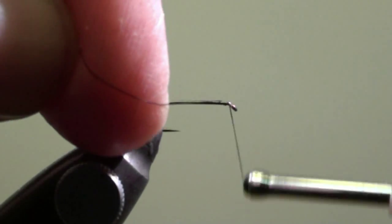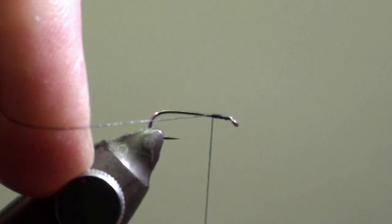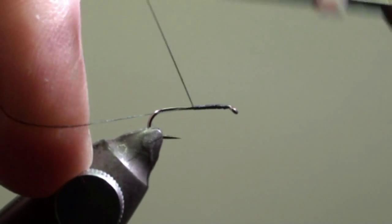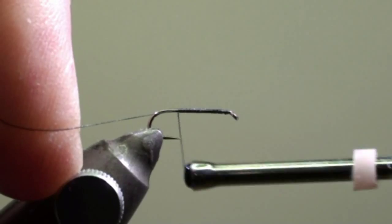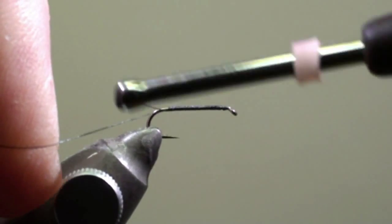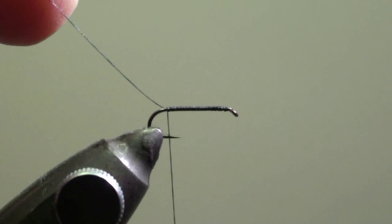Tie in the thread at the eye of the hook and wind it in close turns to the beginning of the curvature of the hook. Cut off the excess of the thread.